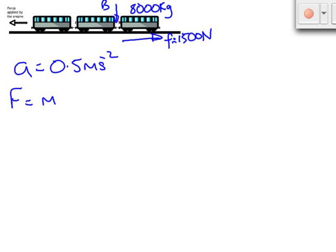We can calculate the unbalanced force giving that acceleration to our carriage using F equals ma. So we take the mass of the carriage and multiply by our acceleration and we find that the unbalanced force acting on the last carriage is 4,000 newtons.